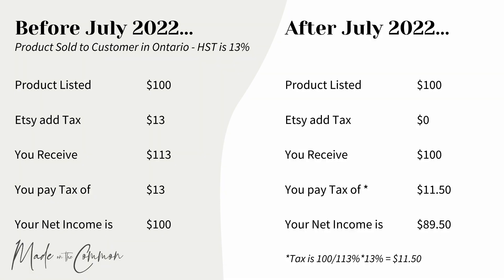From July 2022, though, this has all changed, and Etsy are no longer handling most of the taxes. So if you're GST or HST registered, you would list your product at $100 still, but now Etsy wouldn't add anything extra onto the top of that price. So you would receive the $100, but out of that, you're now responsible for calculating any tax due.